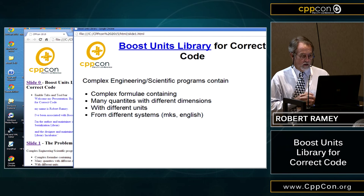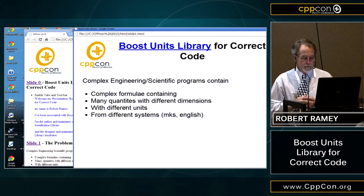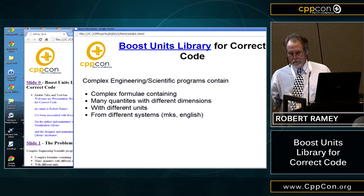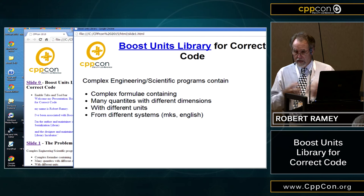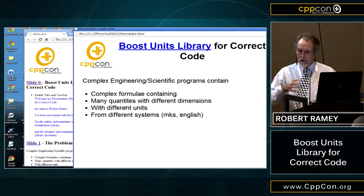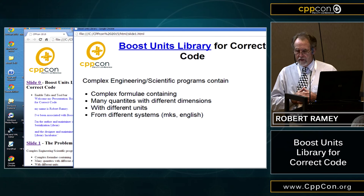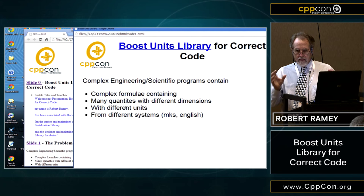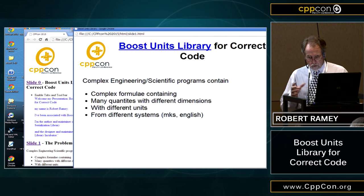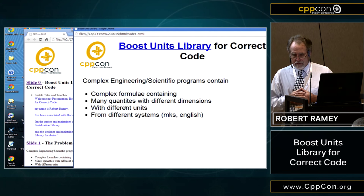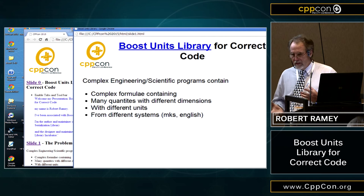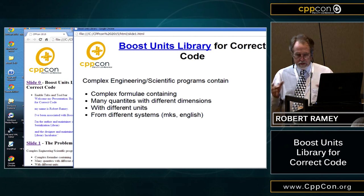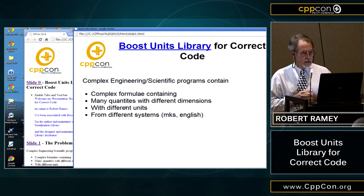This is the problem that this library is meant to solve. Complex engineering and scientific programs contain a lot of complicated formulas — the simplest being velocity equals distance divided by time. These can become arbitrarily complicated, and for something like aircraft simulation, it can be very tedious and very error prone. It's bad enough with dimensions, but when some constants are in English units and others in metric units, keeping track and making all the conversions is a very error-prone process. There have been a number of high-profile disasters associated with exactly this.